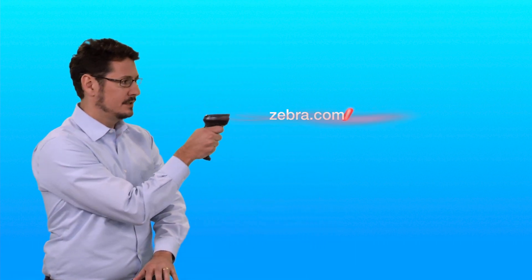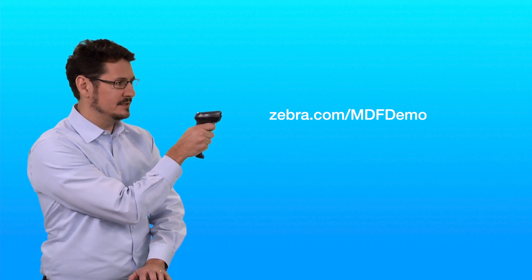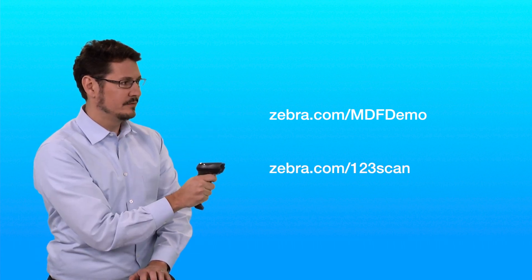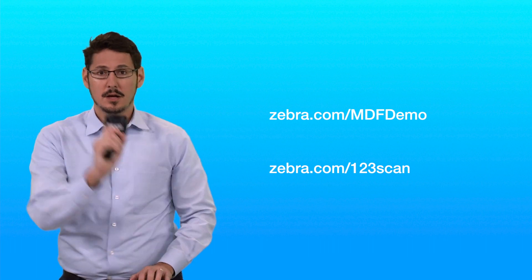Just for our viewers' information and for the purposes of this video, we've pre-configured the parameter barcodes on 123SCAN to make for an easier demo. You can check here to download the parameter barcodes to replicate this demonstration, and down here for more information on 123SCAN.